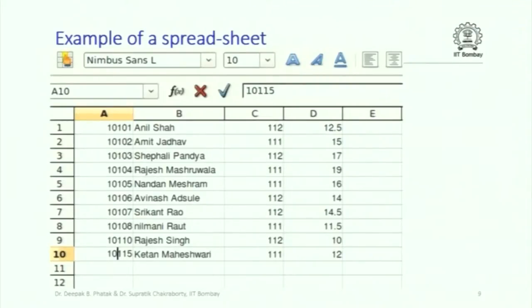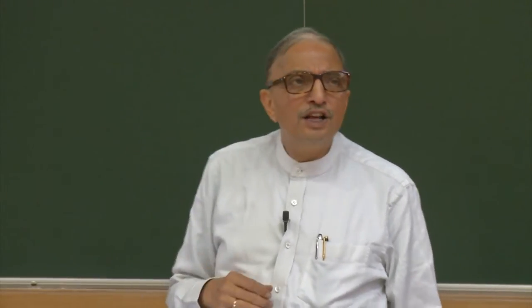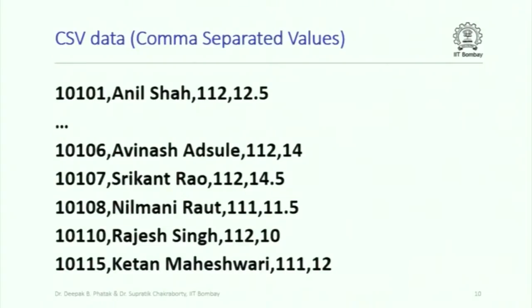A spreadsheet has rows where each row contains data about one student — roll number, name, lab batch, marks in a quiz, etc. Spreadsheets are stored in special internal formats, but all of them can save data in an ordinary text format called comma-separated values (CSV) format. If you save any spreadsheet as a .csv file, the file will be a text file that looks like: 10101, Anil Shah, 112, 12.5 — and so on for each row.